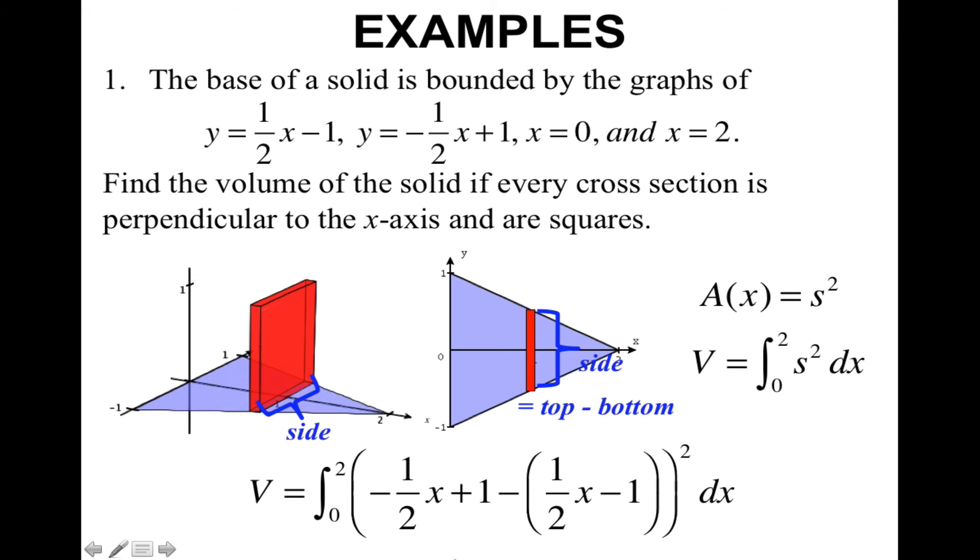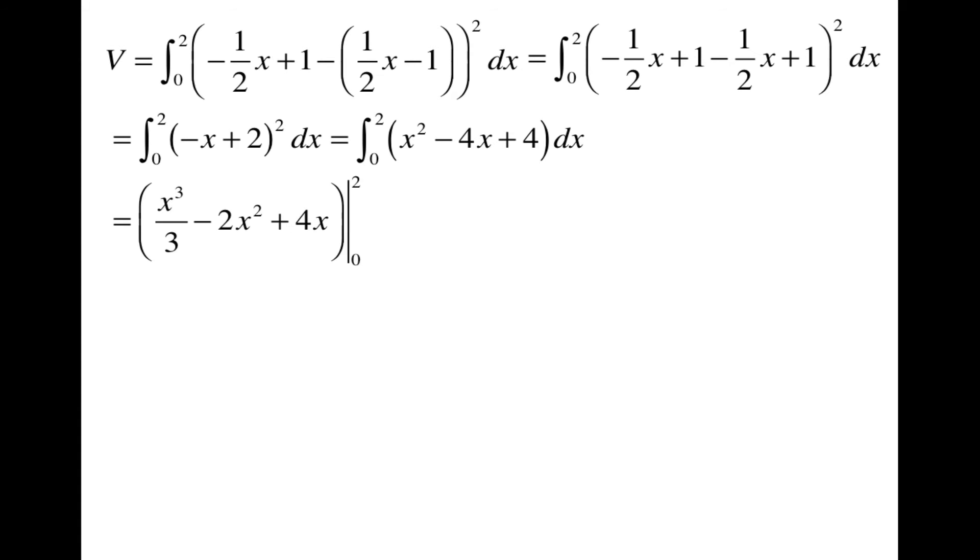I'm going to go ahead and do some simplifying. Distributing the negative. Combining like terms. Then I can go ahead and multiply this out because I have a square. Now I can go ahead and integrate. Then evaluate from 0 to 2. And then simplify. The volume of that pyramid is 8 thirds.